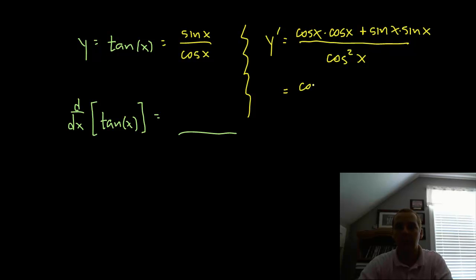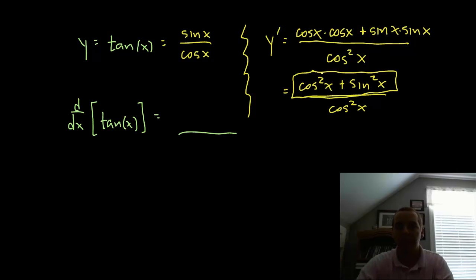Alright, so we get cosine squared x plus sine squared x divided by cosine squared x. Now this numerator right here, something should jump out at you when you look at that numerator there, sine squared plus cosine squared, and pre-cal you learned a trig identity for that. Sine squared plus cosine squared is 1, so this would reduce to 1 over cosine squared x.